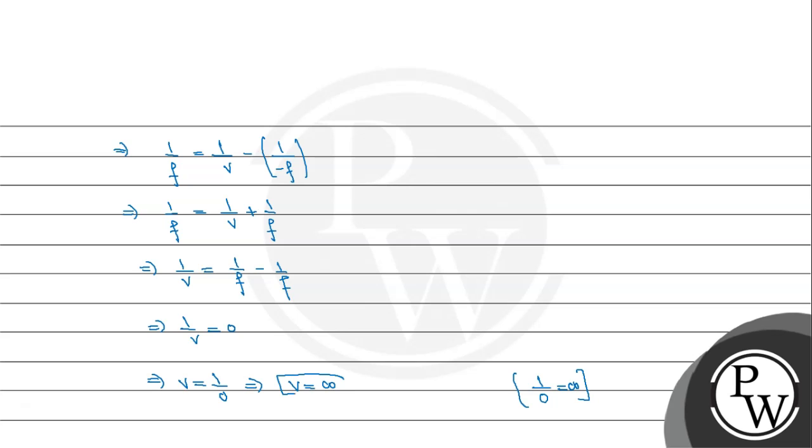Which means the image distance will be equal to infinity. So we will say that the image will form at infinity. If we place the object at the focus, the image will form at infinity. This is the final answer for the given question.